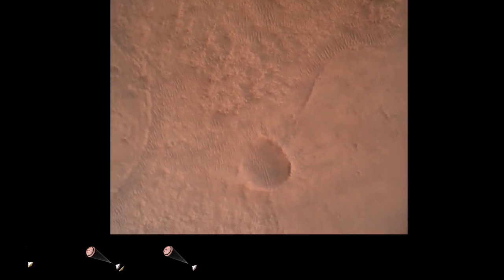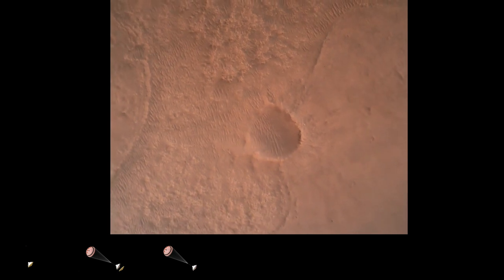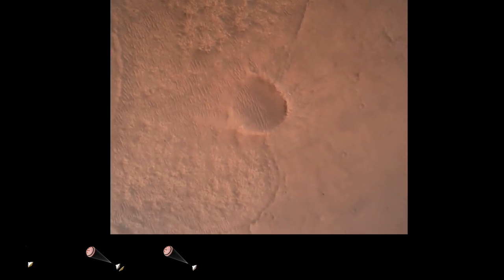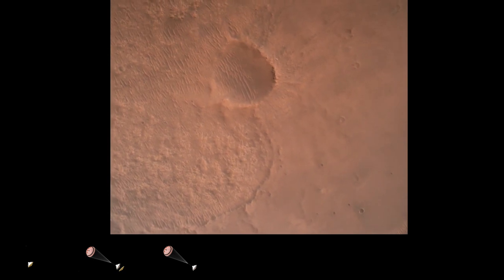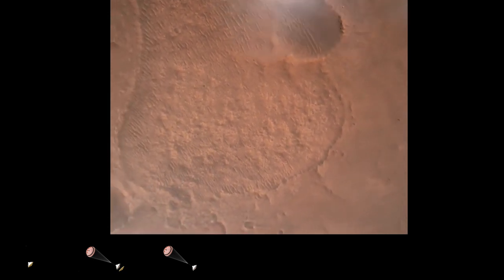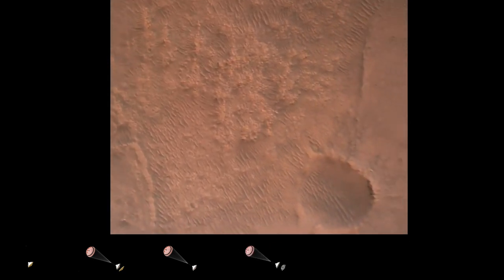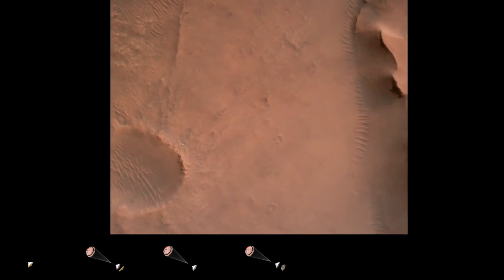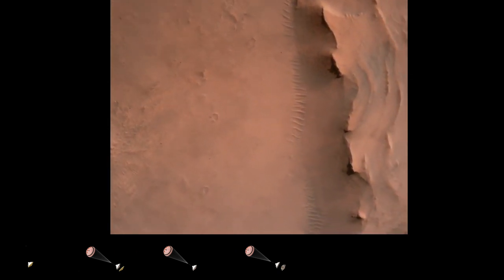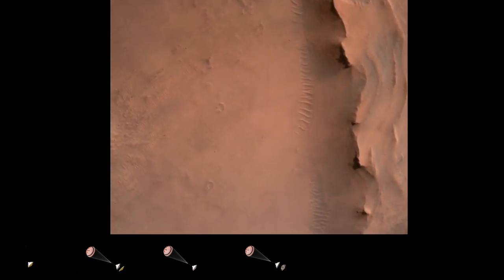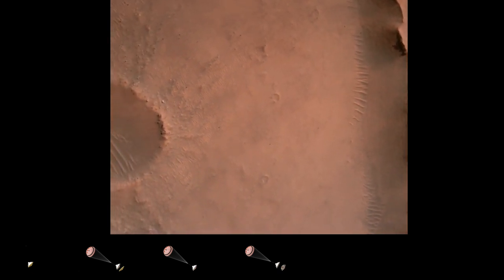Priming. PBA is nominal. We have priming of the landing engines. Backshell set. Current velocity is 83 meters per second at about 2.6 kilometers from the surface of Mars. We have confirmation that the backshell has separated.